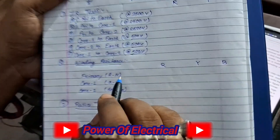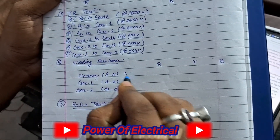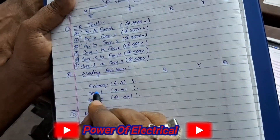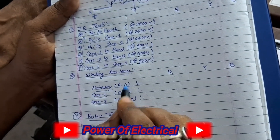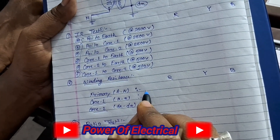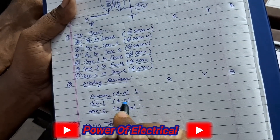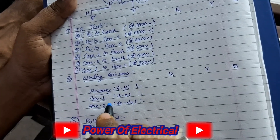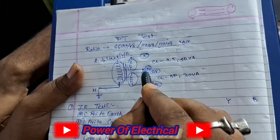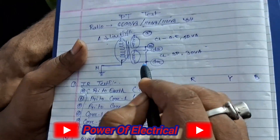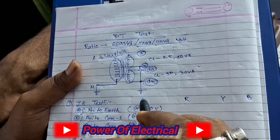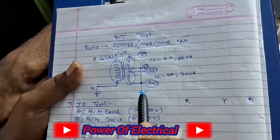For the winding resistance test, we simply use a multimeter to measure the winding resistance of the PT. In the PT there are three cores: primary, secondary core one, and secondary core two. We take three different resistance values. For primary resistance, we connect the multimeter probes to terminals A and N to get the primary resistance. For core one, we connect the multimeter probes to small A and small N terminals. For core two, we connect the probes to DA and DN terminals.